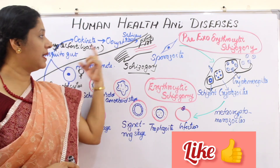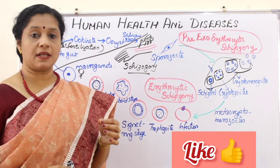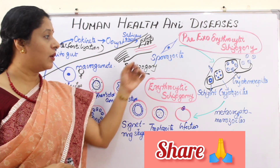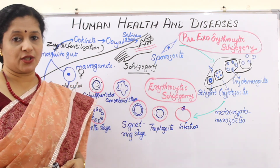The stage happening in the mosquito body is the sexual stage and it is called sporogony, whereas in human beings it is called schizogony.